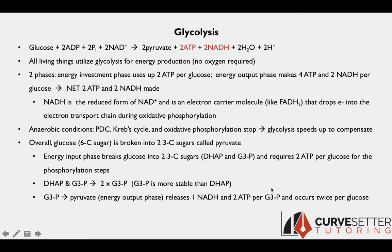We know we got two of these three-carbon molecules, so in the energy output phase we get two NADH and four ATP. Remember, energy input requires two ATP per glucose. Energy output gives us four ATP and two NADH, giving us a net energy gain of two ATP and two NADH per glucose molecule.